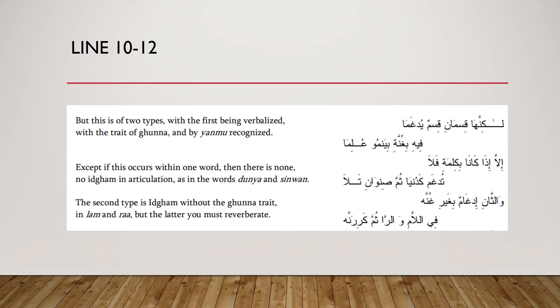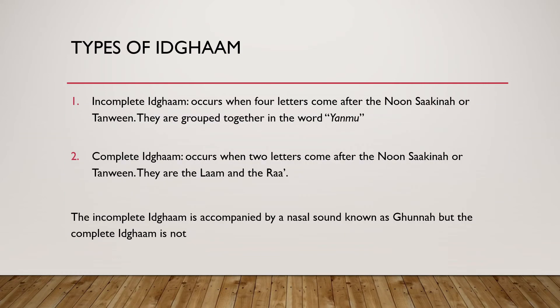He says: 'But it has two categories: a category merged with ghunna, known by yanmu, except when in one word, so do not merge — as in dunya and sinwan. The second is idgham without ghunna in the lam and ra', so repeat carefully.' There are two types of idgham: an incomplete idgham — idgham bi-ghunna — and a complete idgham — idgham bi-ghayri ghunna. The incomplete idgham occurs when four letters come after the noon sakinah or tanween, gathered in the word 'yanmu'.